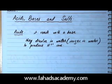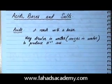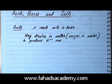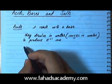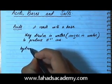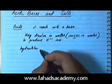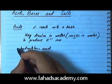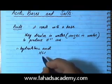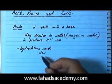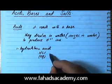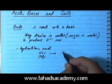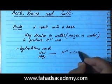We have a long list of acids, but since we are focusing on O-levels right now, we'll deal with a small list of acids. The number one most common acid we'll deal with is hydrochloric acid, HCl. Whenever HCl is in aqueous state — aqueous means dissolved in water — it's going to produce H⁺ and Cl⁻ ions.